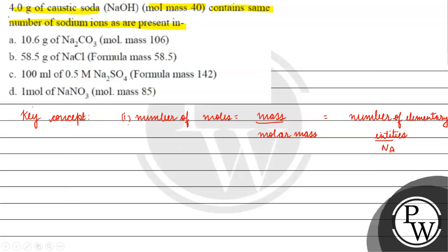What are we asked? 4 grams of caustic soda — how many sodium ions does it contain? We know the mass is 4 grams and the molar mass is 40 grams per mole. So the number of sodium ions equals (4/40) × Avogadro's number, which gives us (1/10) × Avogadro's number.